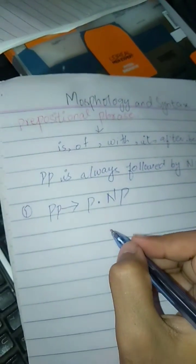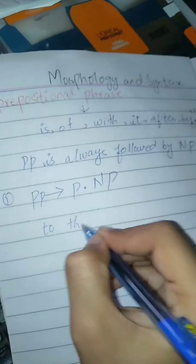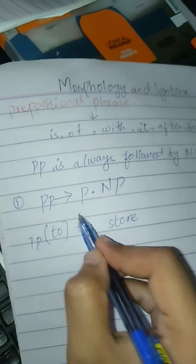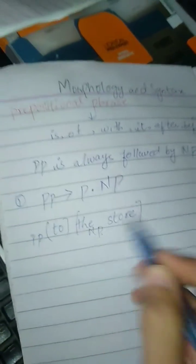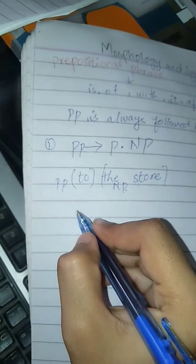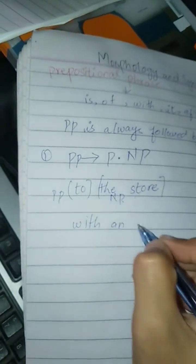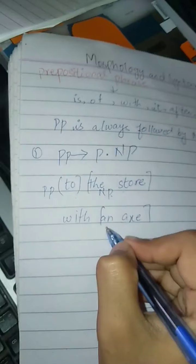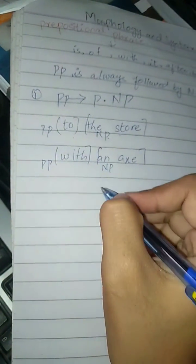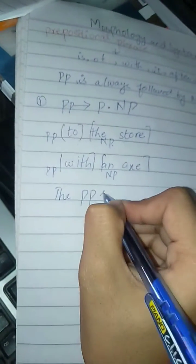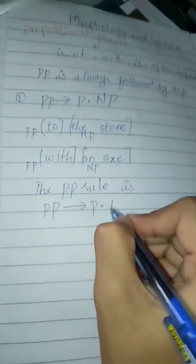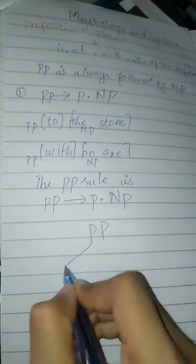For example, take 'to the store.' Here, 'to' is the preposition and 'the store' is the noun phrase. So preposition plus noun phrase forms the prepositional phrase. The second example is 'with nx,' where 'nx' is the noun phrase and 'with' is the preposition. The PP rule is: prepositional phrase equals preposition plus noun phrase.